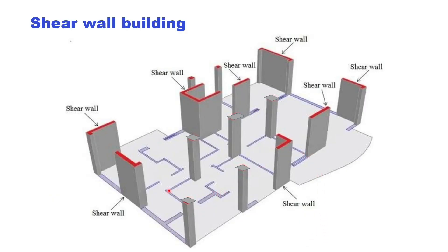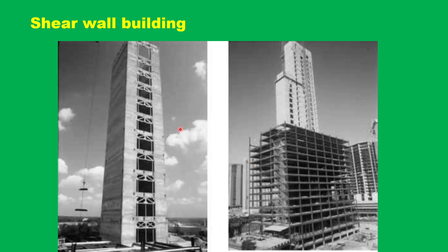The shear wall disposition is shown here by another figure. All elements with the red top are shear walls having different orientations and configurations. The rest of the pedestals are columns. A shear wall building with a skyscraper-like large height is also shown — these are shear walls with openings.